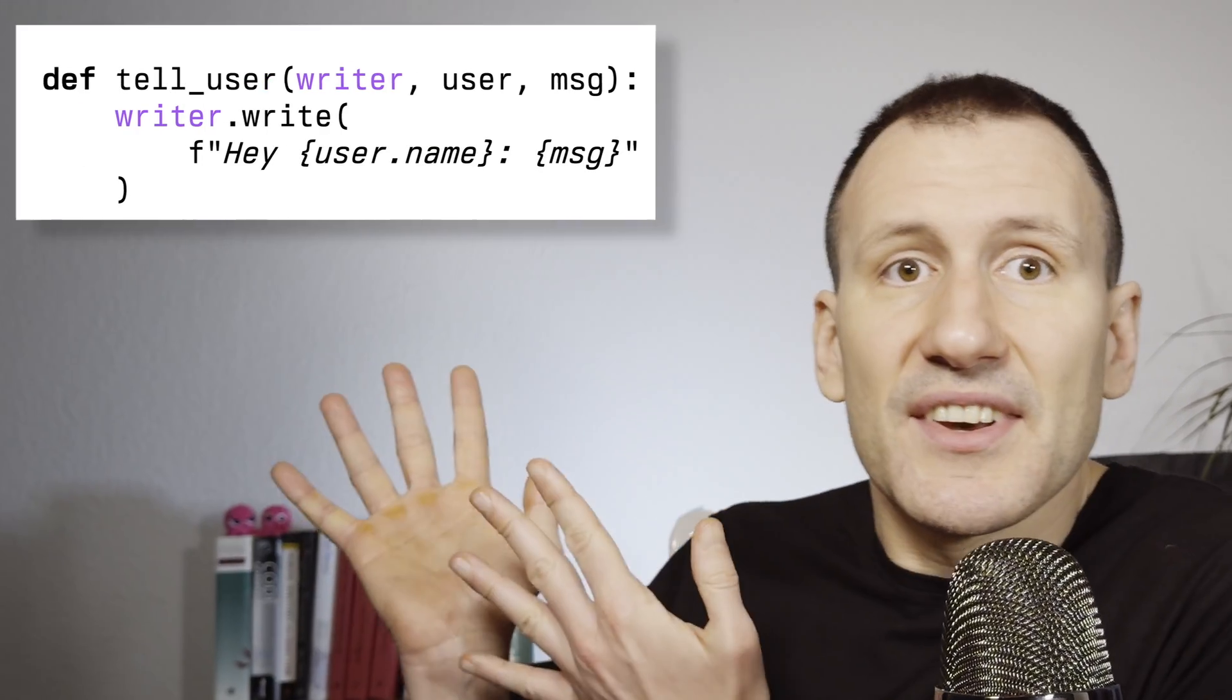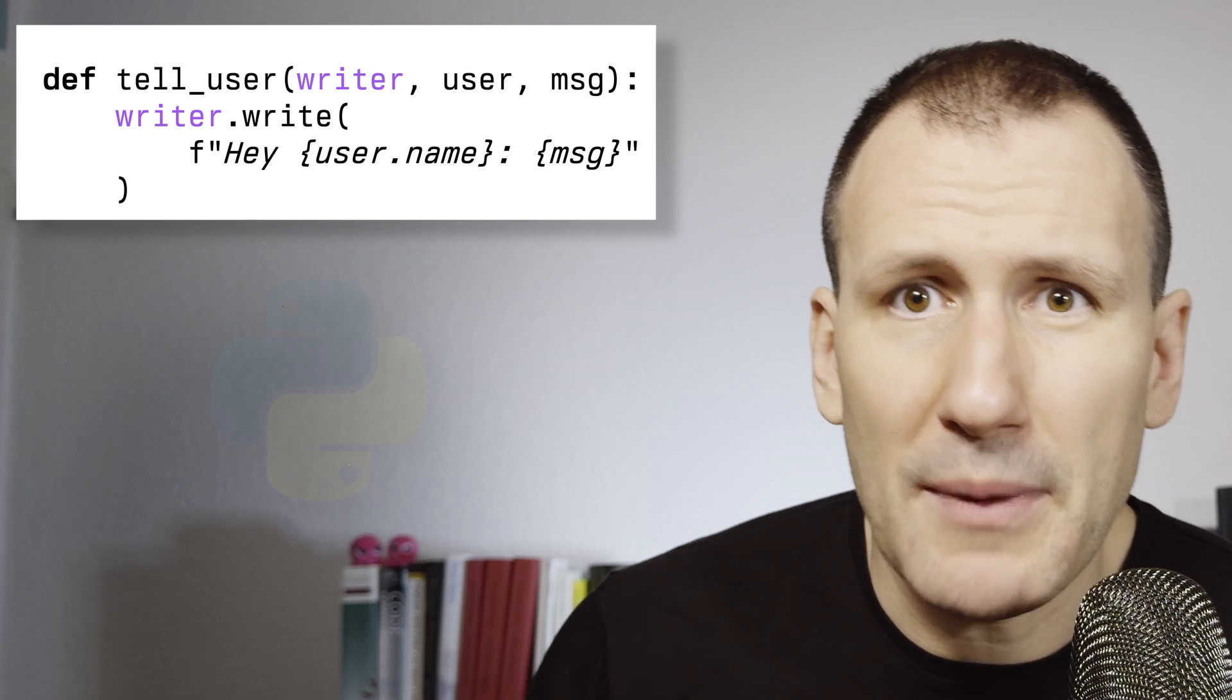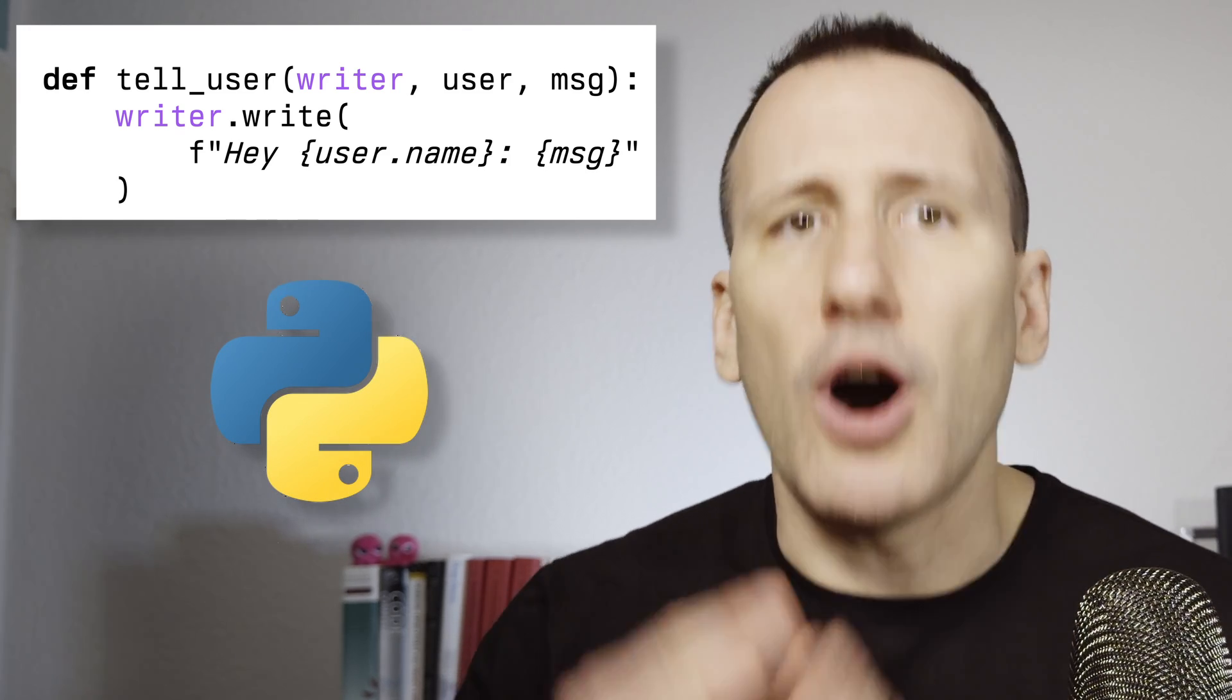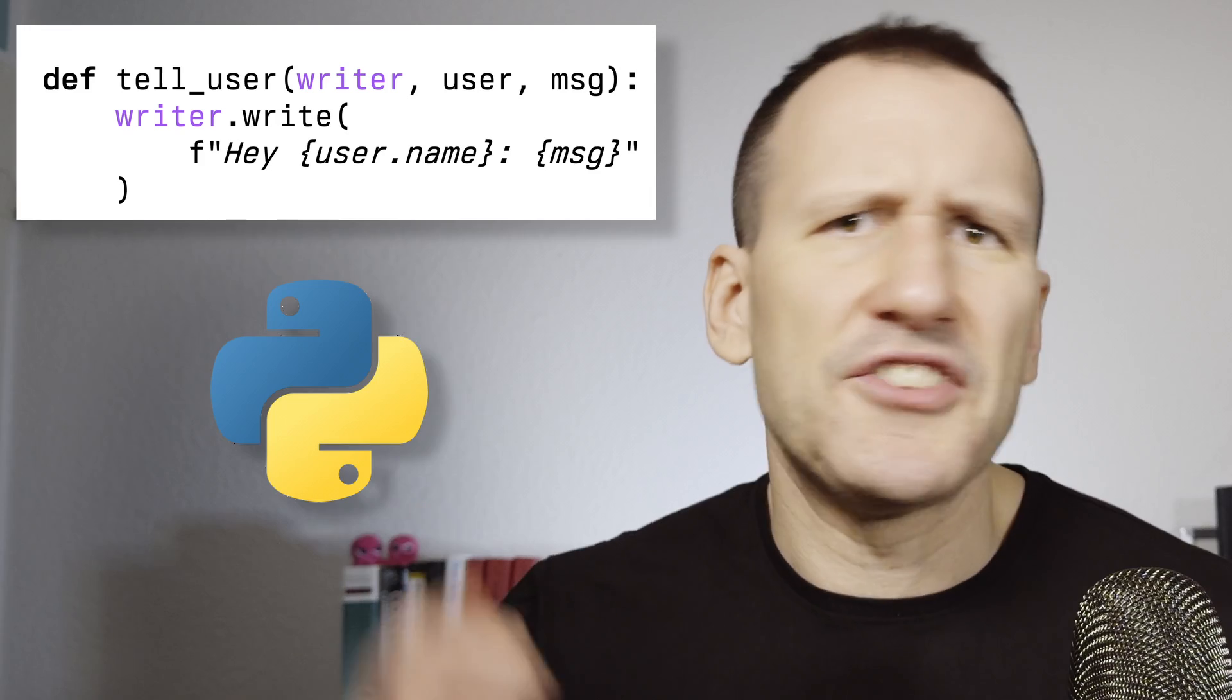because dependency injection just means that a function or a method or a class doesn't create the dependencies it needs to do its business, but gets them passed as arguments instead. In practice, this can be simple as this. Yes, I'm using Python for my examples because it's terse yet readable, but I'll be mostly talking about concepts today. So don't let that little snake scare you away.